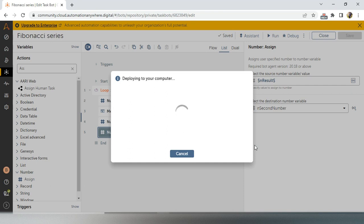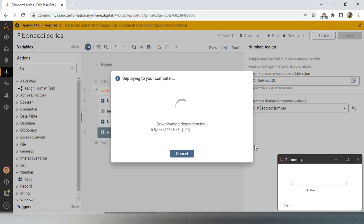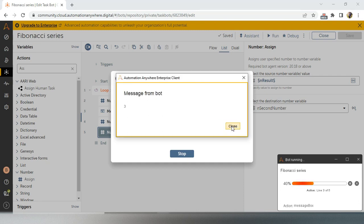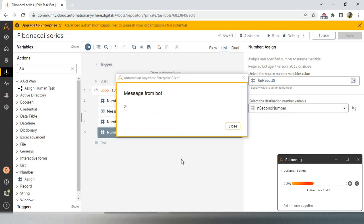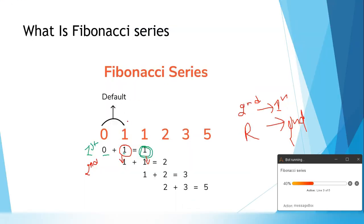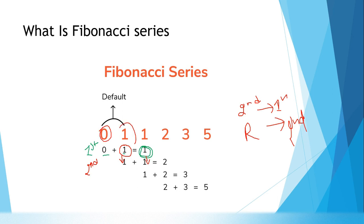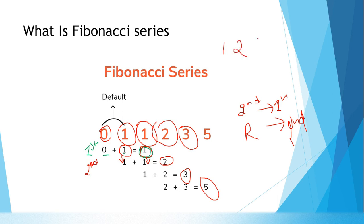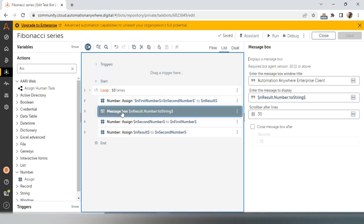Let me run the bot now to see the result. I got one, then two, three, five — I am getting individual message boxes for each number. But the Fibonacci series needs to be shown in a single line to the interviewer: zero, one, one, two, three, five, eight — like this. So we need to show the series as one, two, three, five, eight in a single line.